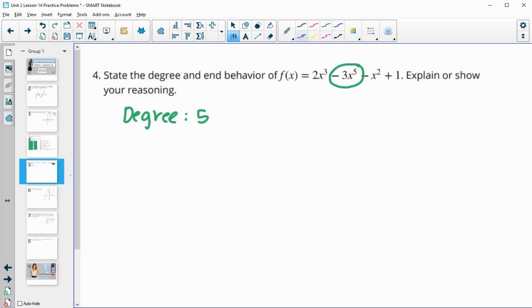For end behavior, that's an odd degree and the leading coefficient is negative 3. Odd degree means one end up, one end down. Negative leading coefficient means it's going to start high and end low.